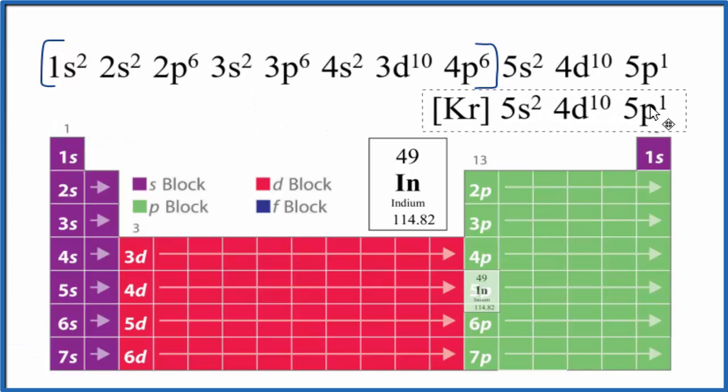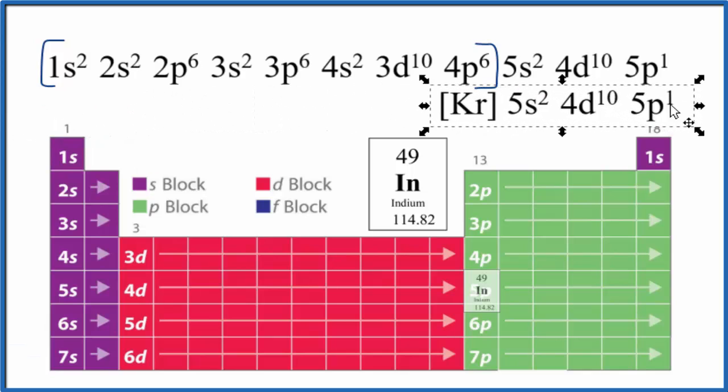So we'll just condense that all down to [Kr] and then have the ending here. So this is the abbreviated electron configuration. Often you'll see the 5s2 put after the 4d10. That's okay as well.